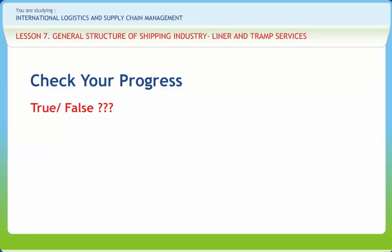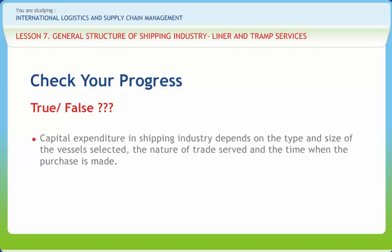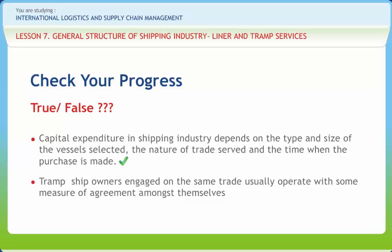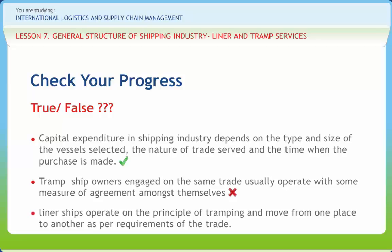Now let us check if we have understood the various concepts discussed in this lesson clearly. Capital expenditure in shipping industry depends on the type and size of the vessels selected, the nature of trade served, and the time when the purchase is made. Statement: Tramp ship owners engaged on the same trade usually operate with some measure of agreement amongst themselves. Right or Wrong? Wrong. Statement: Liner ships operate on the principle of tramping and move from one place to another as per requirements of the trade. Right or Wrong? Wrong.